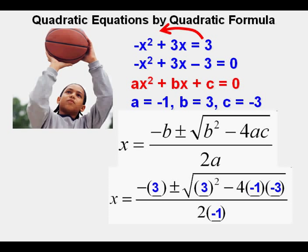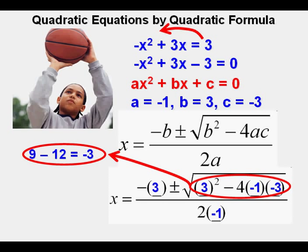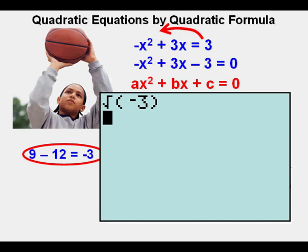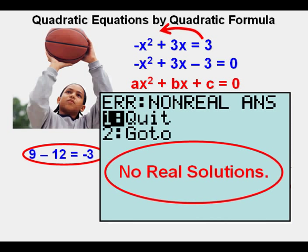The first thing Joe calculates is the discriminant under the square root sign. This simplifies to 9 minus 12 or negative 3. And since the square root of negative 3 is a non-real answer, we say that this quadratic equation has no real solutions. No real numbers for x that make this equation a true statement.